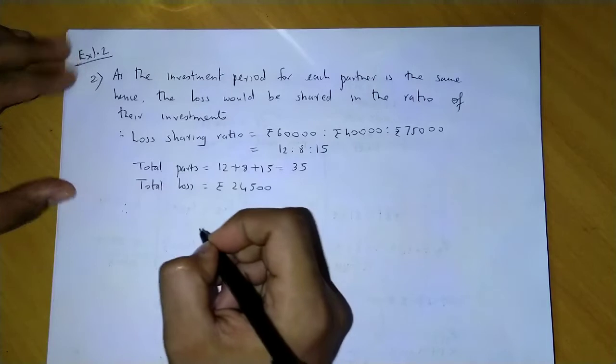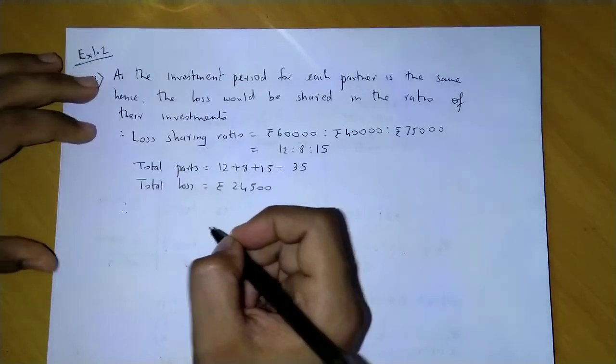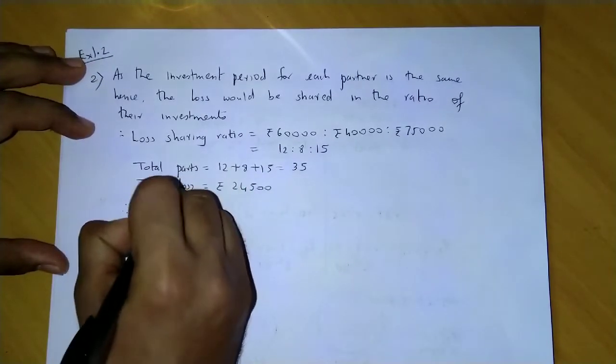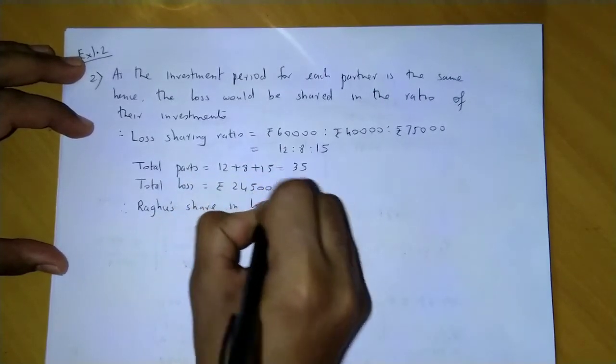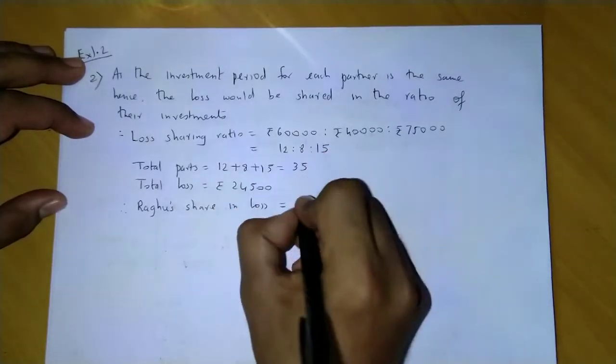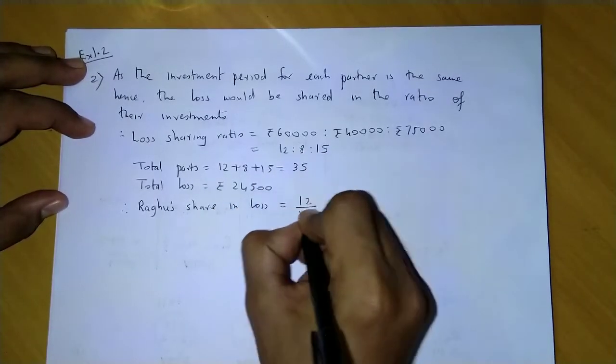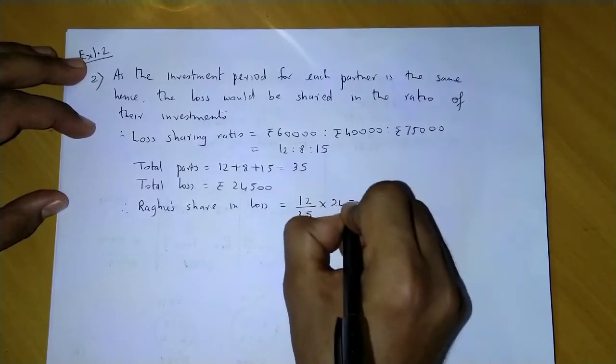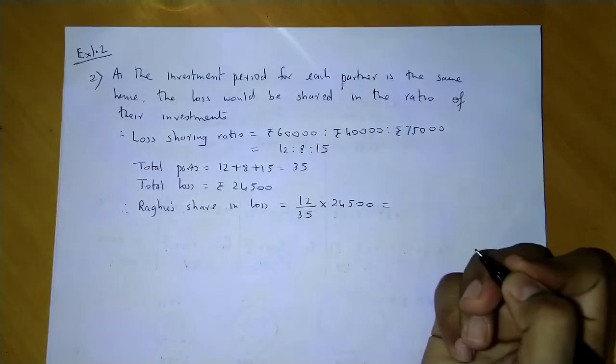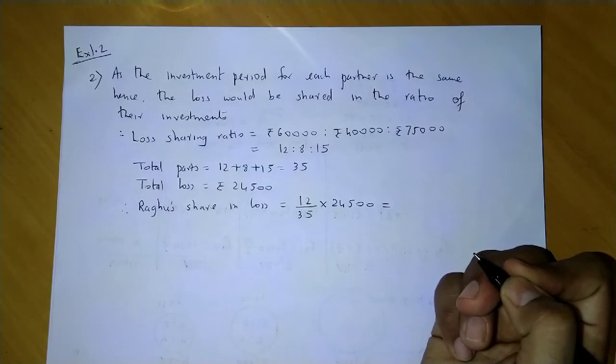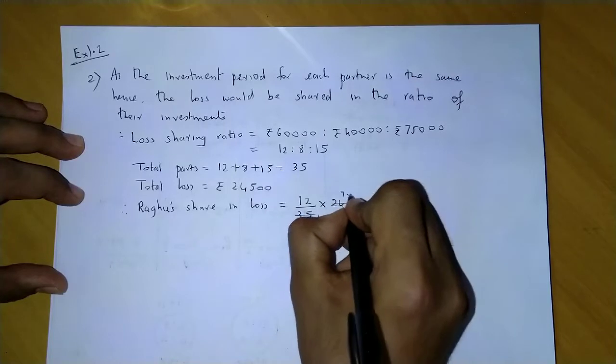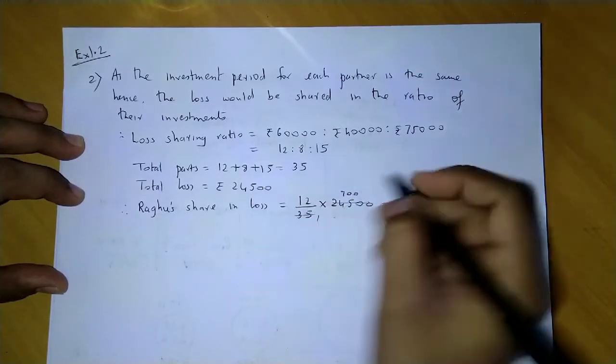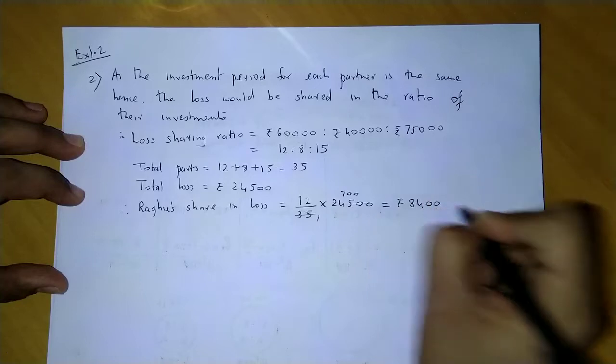Now, we will find share in loss. The first partner is Raghu. Raghu's share in loss: we will find 12 parts out of 35 into 24,500. Now 24,500, if we divide by 35, this comes 700. And 7 into 12 is 84, so this answer is 8,400.